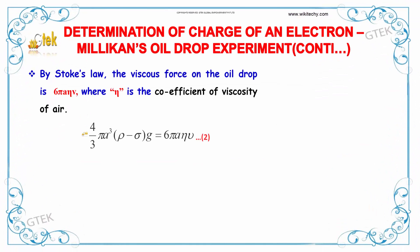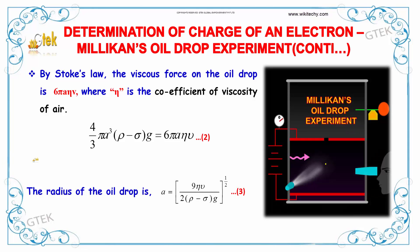By Stoke's law, the viscous force on the oil drop is 6 pi a nu V, where nu is the coefficient of viscosity of air. So 4 by 3 pi a cubed times rho minus sigma into g is equal to 6 pi a nu V.